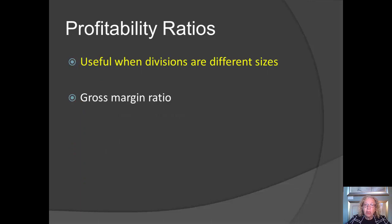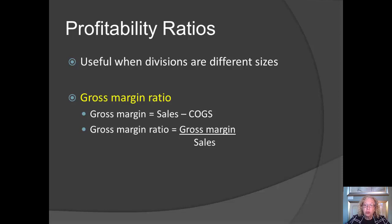So let's look at some profitability ratios, which can be very helpful if we are comparing divisions of different size, because we're going to do this on a per-dollar basis rather than on total division profits. One ratio is the gross margin ratio. We know that gross margin is the difference between sales and cost of goods sold. The gross margin ratio is the gross margin divided by sales revenue.